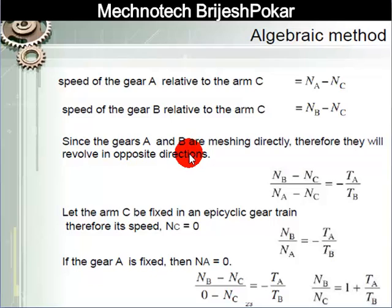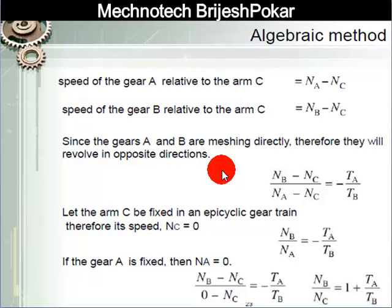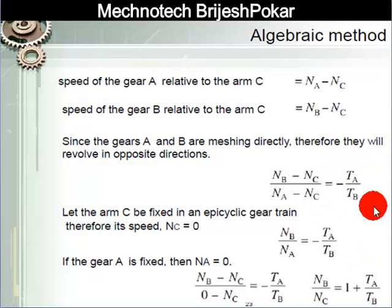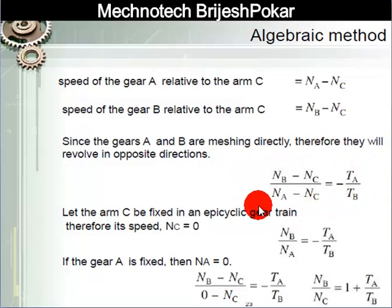Since gear A and gear B are meshing directly, they revolve in opposite directions. Therefore: (Nb − Nc) / (Na − Nc) = −Ta/Tb. This is the main equation to remember for the algebraic method.